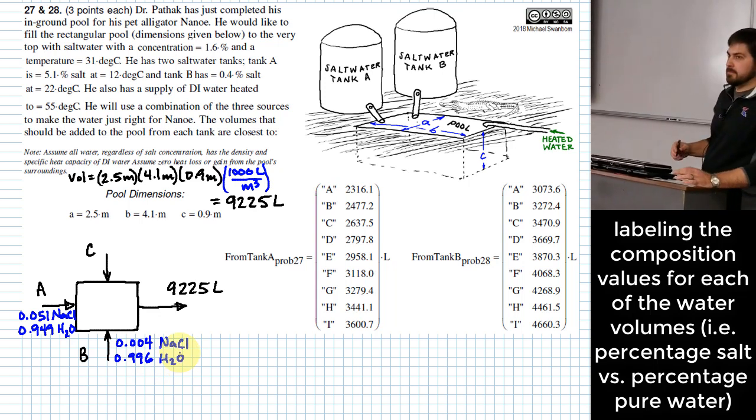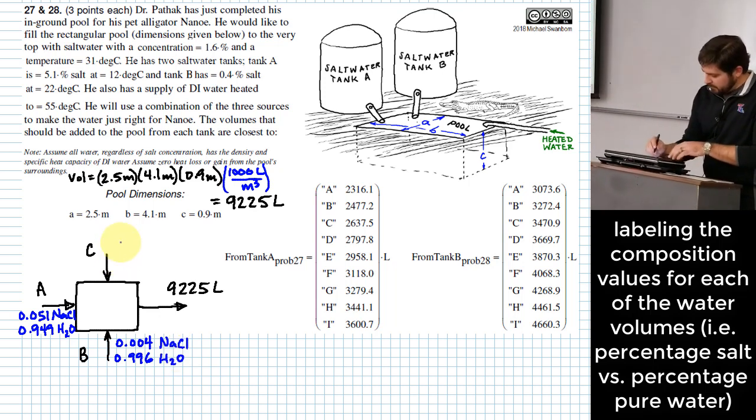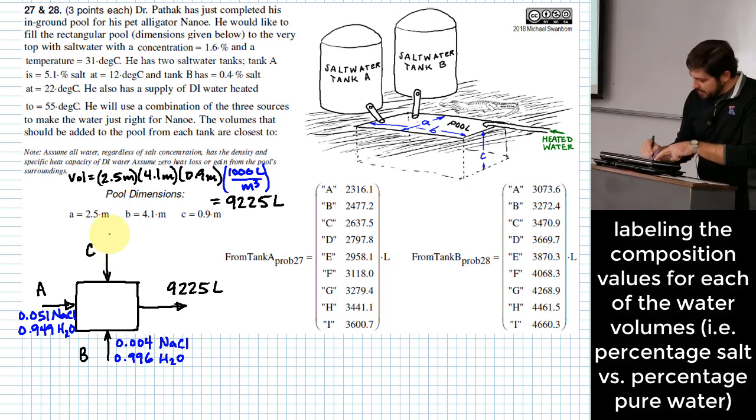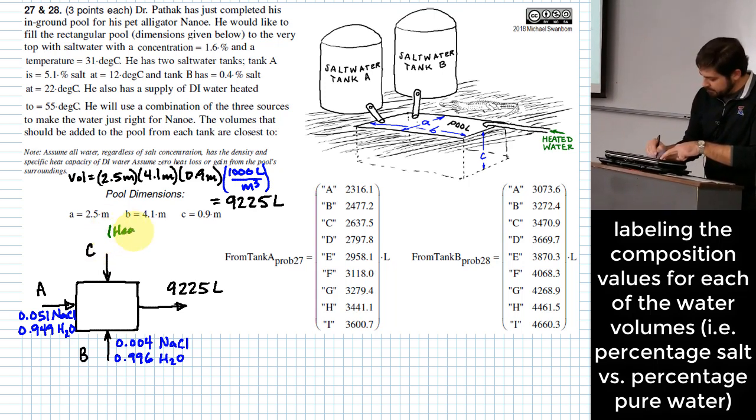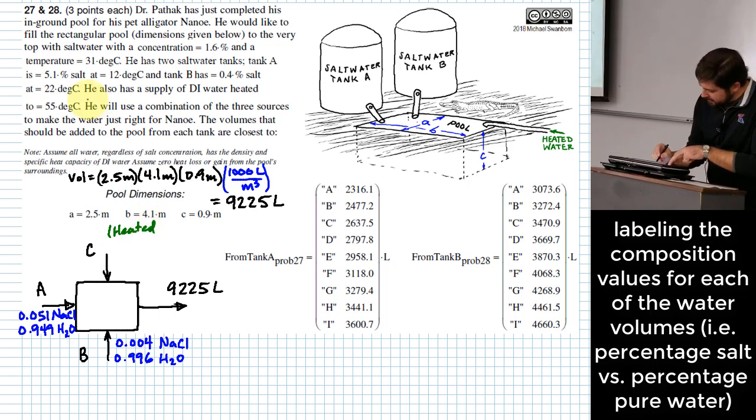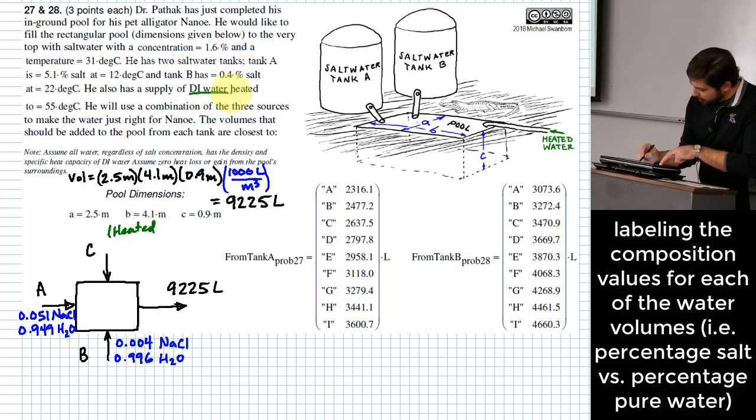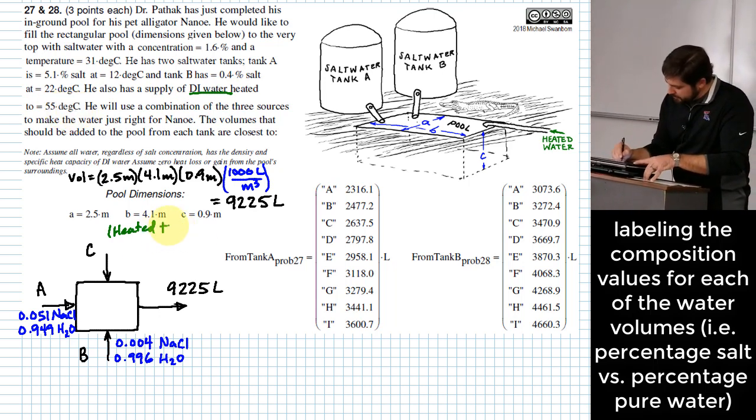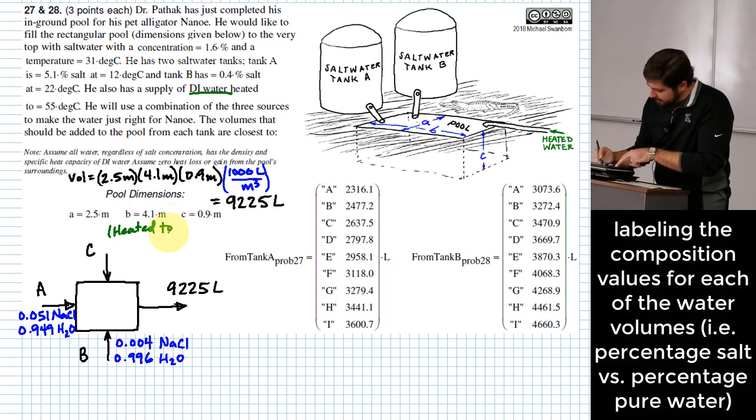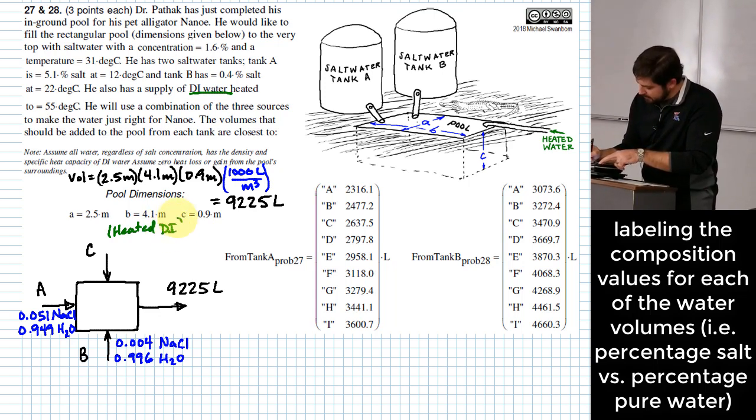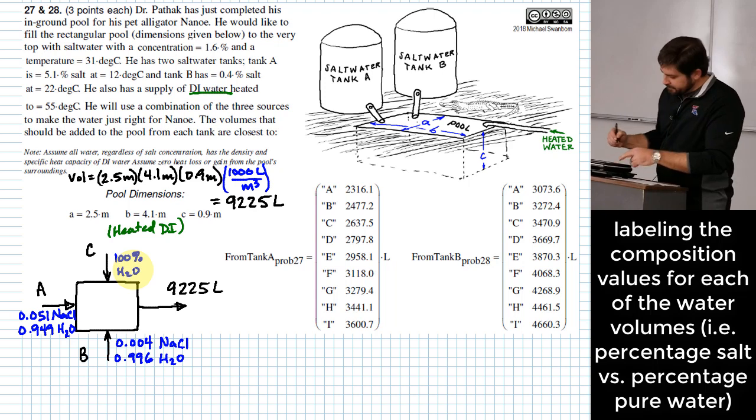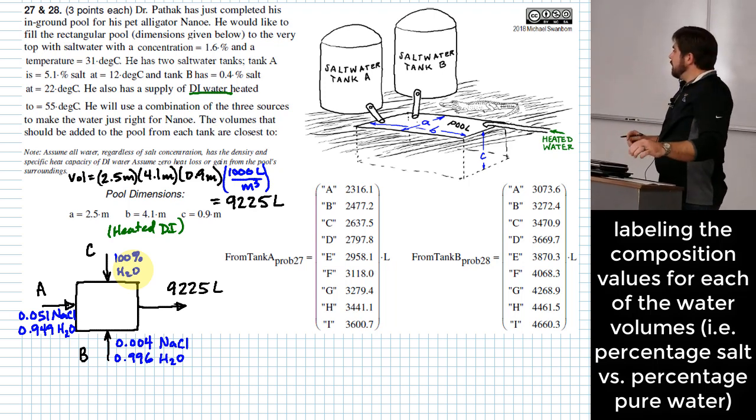0.4% salt. Be careful on those decimals. To get 0.4%, we got to go 0.004 as a decimal NaCl. And what does that leave in terms of water? 0.996. What about C? Keep in mind, what we're doing with flow C, C is the heated water.